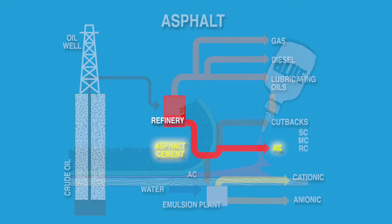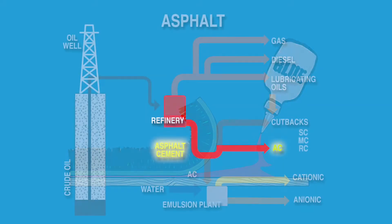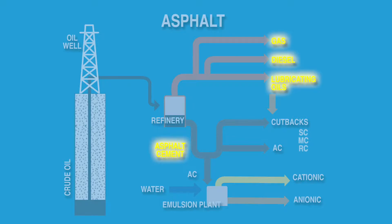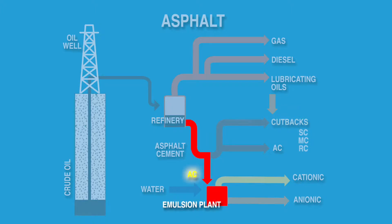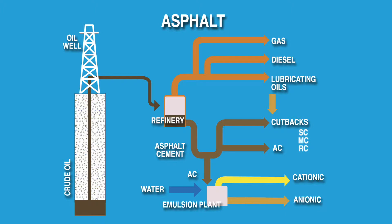Asphalt cement is the base liquid, or glue, in the asphalt paving mixes. There are various grades of asphalt cements, or ACs, related to their viscosity, or hardness. The AC is also the base product for the various road construction liquid asphalts. AC can be blended with light ends and lubricating oils to produce cutbacks, or blended in a mill where it is sheared and suspended in water and an emulsifying agent to produce an emulsion. Some asphalt cement is also blended with polymers and recycled rubber to create specialized products.